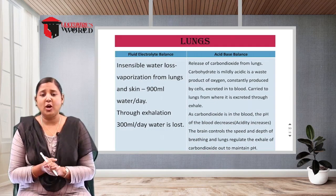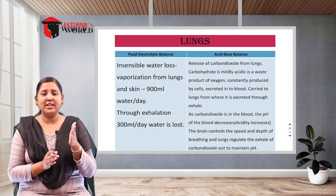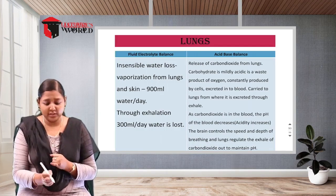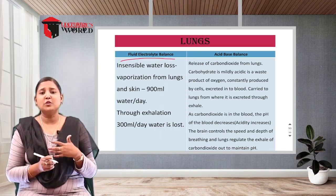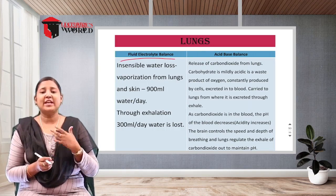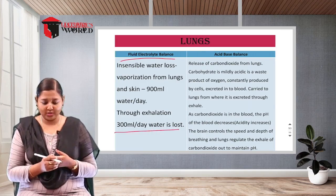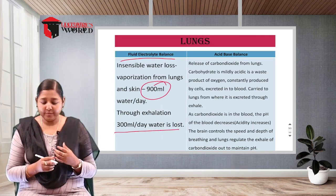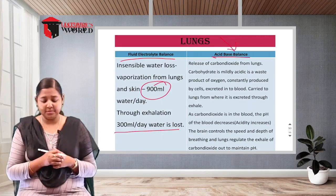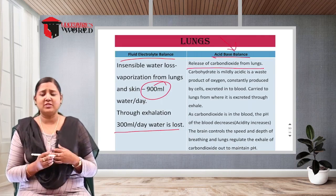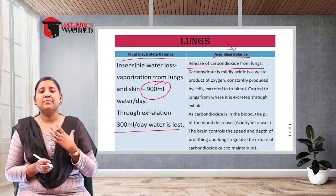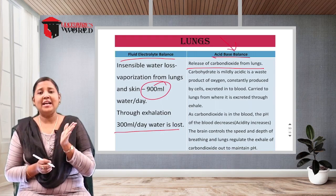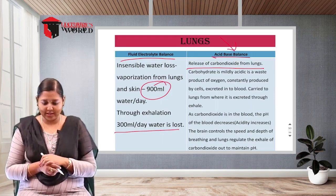The lungs are compared in two roles. For fluid and electrolyte balance, the lungs contribute through insensible water loss — about 300 ml lost during exhalation and 900 ml through vaporization. For acid-base balance, the lungs release carbon dioxide. We inhale oxygen, and CO2 produced as a waste product from cells travels through the blood to the lungs and is exhaled out.